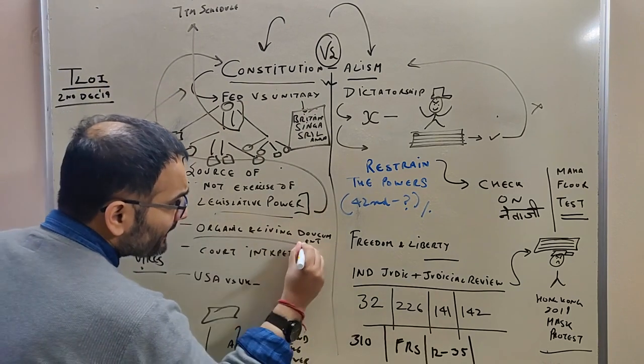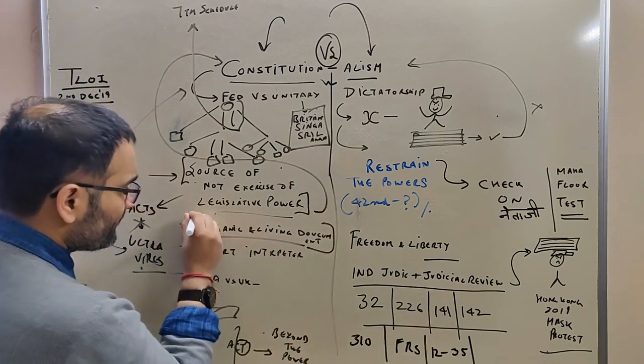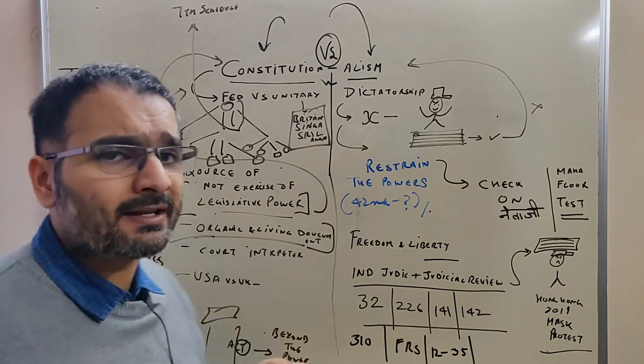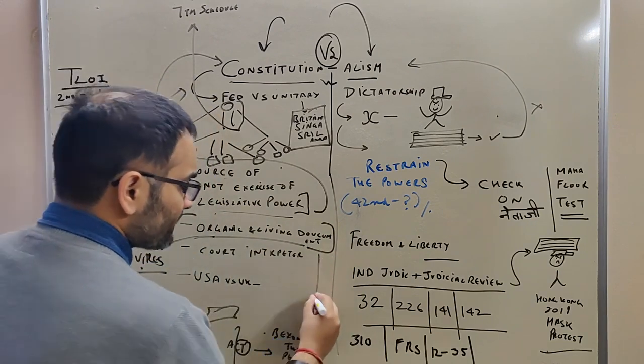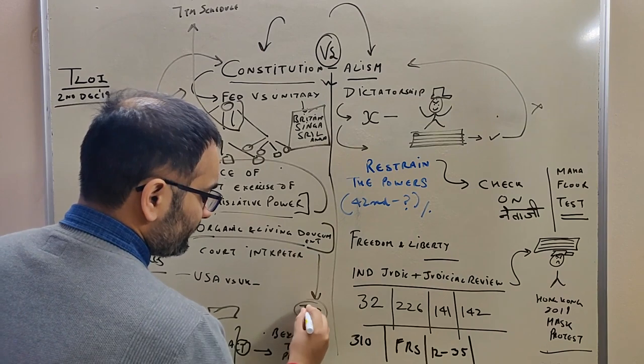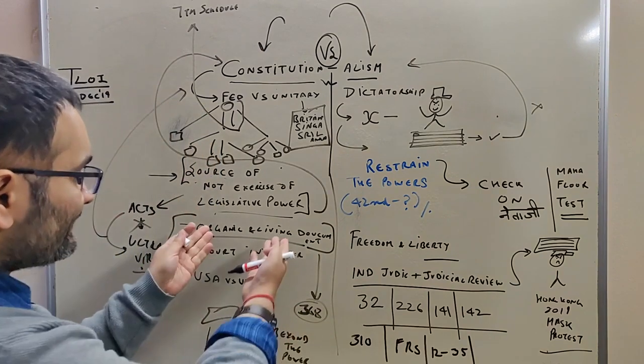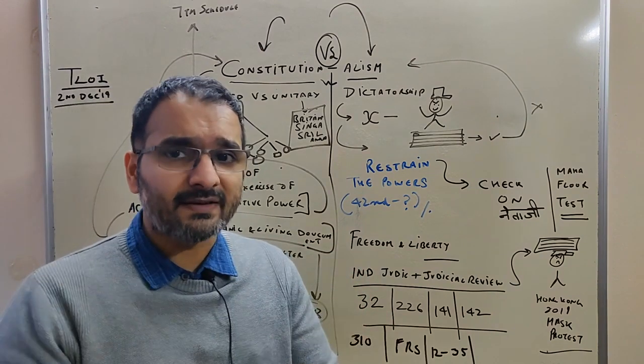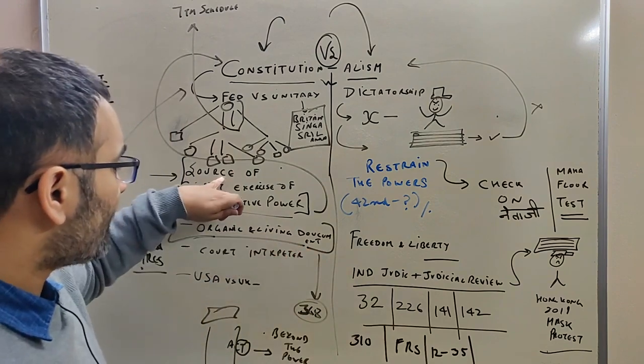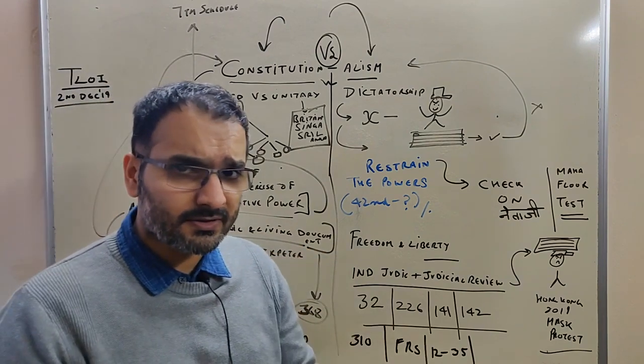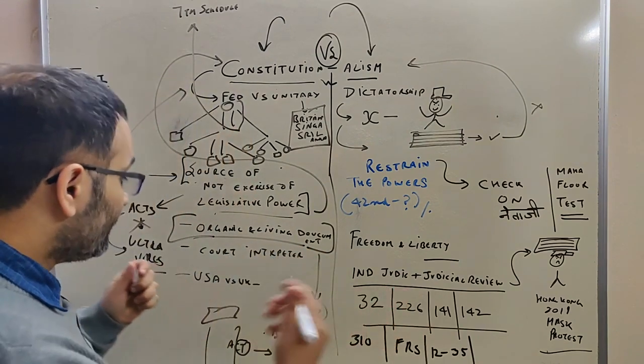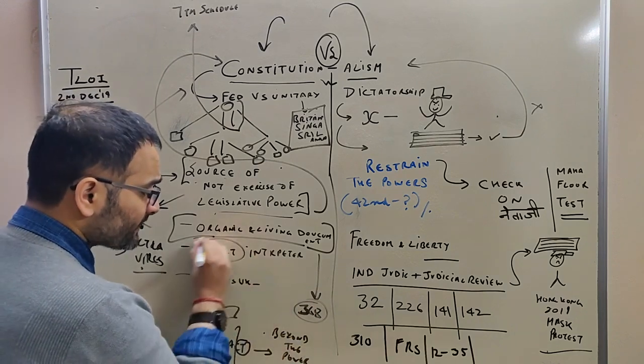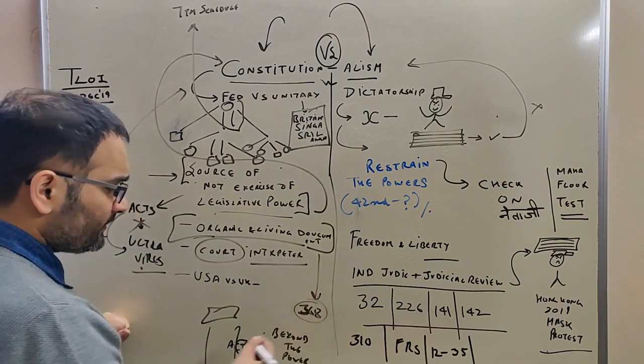Then one thing you should write is that it's an organic and living document. When you write this statement, you're going to mention amendments. Amendments are in Article 368. As times change, lawmakers use the power they have to amend the constitution. And then we go ahead with whatever the need. And what are the courts? Courts are the interpreters of the constitution.